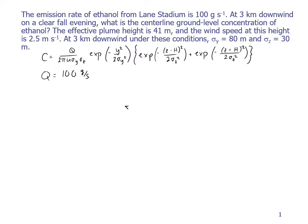At three kilometers downwind on a clear fall evening, what is the centerline ground level concentration of ethanol? Remember, we're looking for the concentration at some point in space. We need to know what that point in space is. Well, three kilometers downwind means that our X is three kilometers.